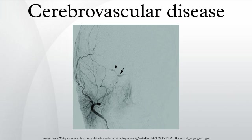Strokes can also result from embolisms; embolism blocks small arteries, causing damage to occur. Spontaneous rupture of a blood vessel in the brain causes a hemorrhagic stroke. Another form of cerebrovascular disease includes aneurysms.